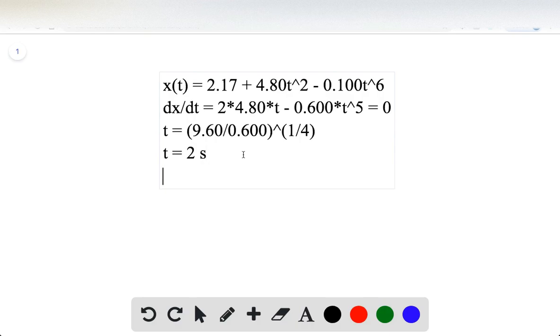But we wanted to find position at this time. Plugging in 2 back into our original equation, we get position when its velocity is zero is 15.0 meters.